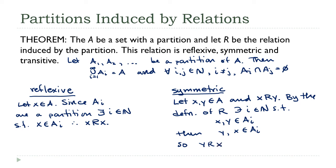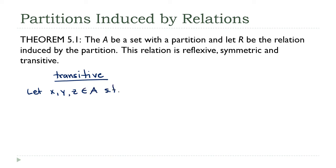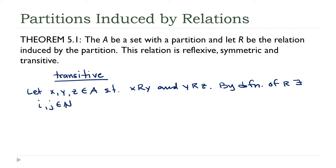That completes symmetric. Now transitivity: let x, y, and z be elements of a such that x is related to y and y is related to z. Again by the definition of r, there exist natural numbers i and j such that x and y are in a sub i, and y and z are in a sub j.